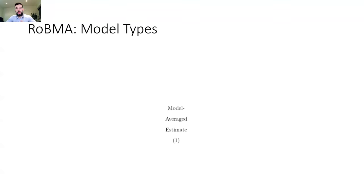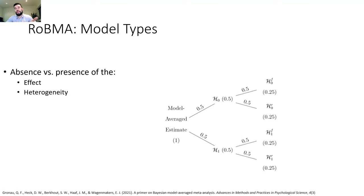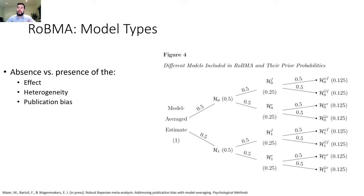How do we split the ensemble? When you obtain the model average estimate, you can look at the different components in terms of whether a model specifies the absence or presence of the effect. You split the prior probability equally across those two model pairs, then equally across models assuming presence or absence of heterogeneity, and then publication bias. At the end, you have eight different model types specifying all possible combinations of either the presence or absence of the effect, heterogeneity, and publication bias.